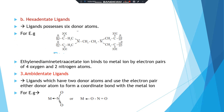The next type is ambidentate ligands. Ambidentate ligands have two donor atoms and can use the electron pair of either donor atom to form a coordinate bond with the metal ion. For example, NO2⁻ can link with the metal ion through nitrogen or oxygen. In the first structure, nitrogen from NO2⁻ is the donor atom; in the second structure, oxygen from NO2⁻ is the donor atom. Therefore, NO2⁻ is an ambidentate ligand.